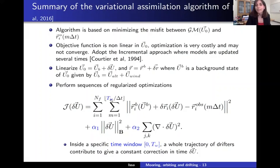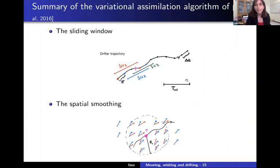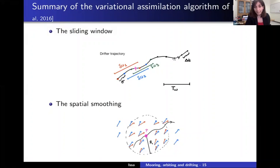The parameters of the algorithm are highlighted in blue. We have the relative confidence weights α₁ and α₂ for each term. Another important parameter is the window size T_W. This is best seen in a time diagram: the drifter trajectory has a time resolution Δt — for example, six hours. The window size T_W specifies how many observations enter into computing a single correction to the velocity field — a correction that is constant in time within that window.